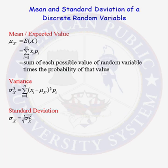Mean — another word for mean — is the expected value. Mu represents the mean, and x is our random variable. We are calculating the mean of the random variable x, or the expected value of x. It is a discrete random variable, so it has a finite or countably infinite number of possible values.